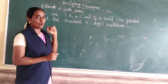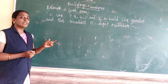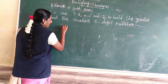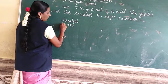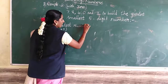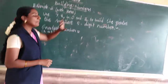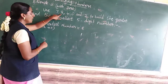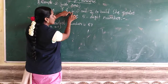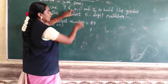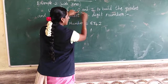Now we are using 0, so be very careful. First, we find the greatest number. Greatest number means descending order — big to small. From 7, 8, 4, 0, 2 — the biggest number is 8. Next biggest is 7. Then 4, then 2, and last is 0. So the greatest number is 87420.